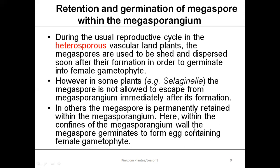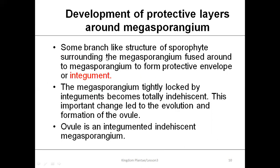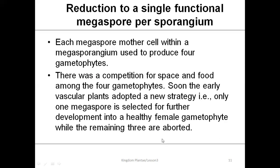The megaspore germinates to form the egg within the female gametophyte. Some branch-like structures of the sporophyte surrounding the megasporangium fuse around it and form a protective envelope called the integument. The megasporangium, tightly locked by the integuments, becomes totally indehiscent. This important change led to the evolution and formation of the ovule — an integumented indehiscent megasporangium.